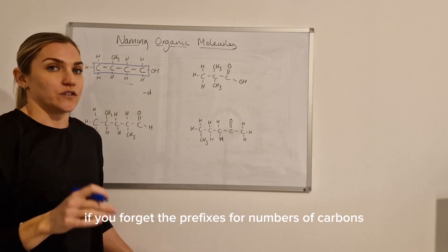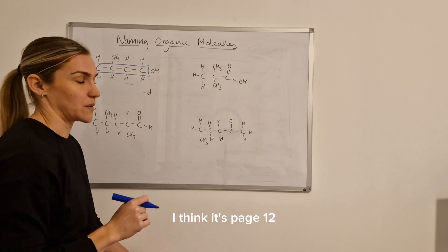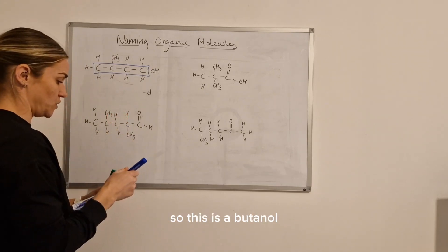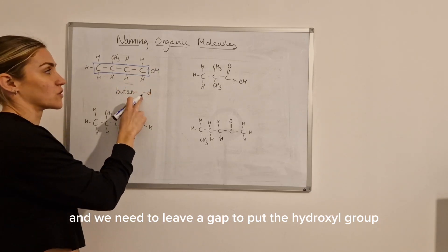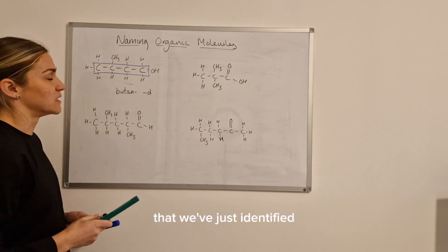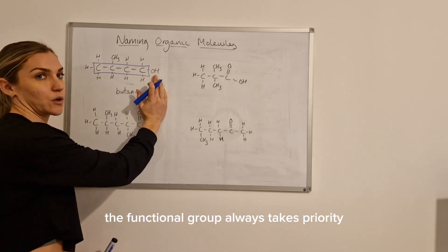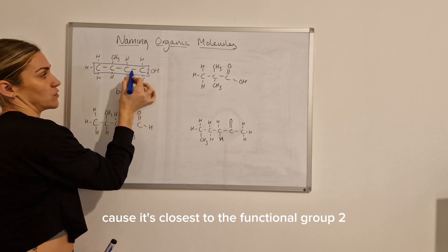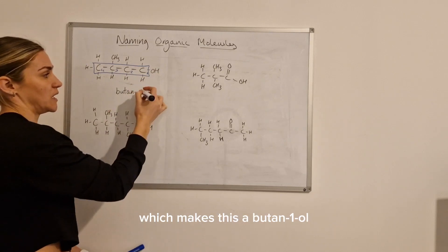If you forget the prefixes for numbers of carbons, you can look them up on the melting and boiling points of organic compounds page in the data booklet — I think it's page 12 — and you would find that the prefix for four carbons is 'but'. So this is a butanol, and we need to leave a gap to put the hydroxyl group number and location. When numbering the carbon chain we need to number from the end closest to the functional group, so this would be carbon one, two, three, four — and our hydroxyl group is on carbon one, making this butan-1-ol.